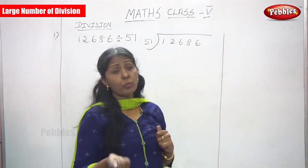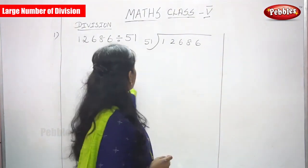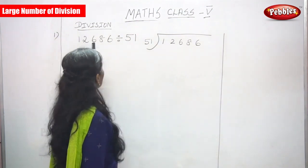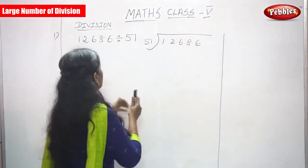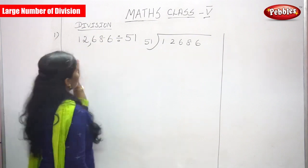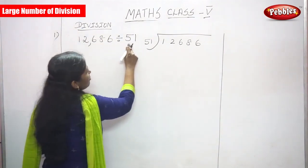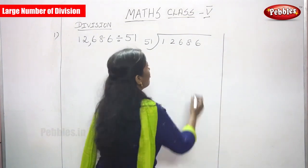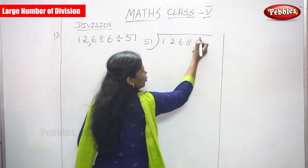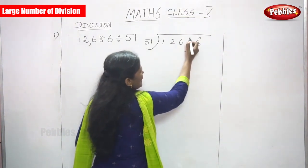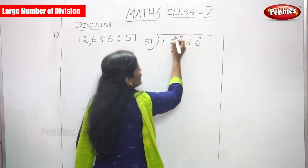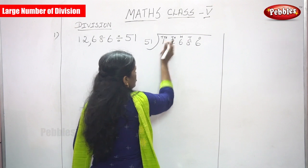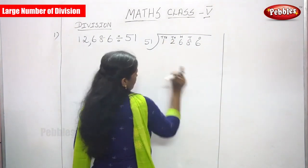Now let's move on to large number division. The first question is 12,686 divided by 51. First you have to write the place value: ones, tens, hundreds, thousands, then TTH — that is ten-thousands. We are dividing by 51.